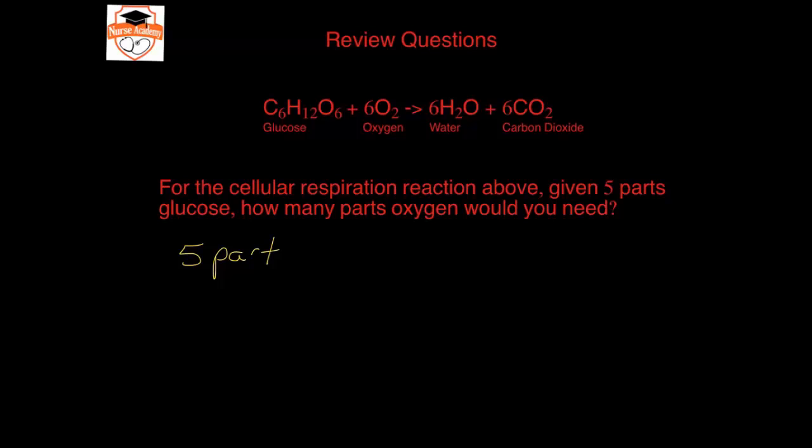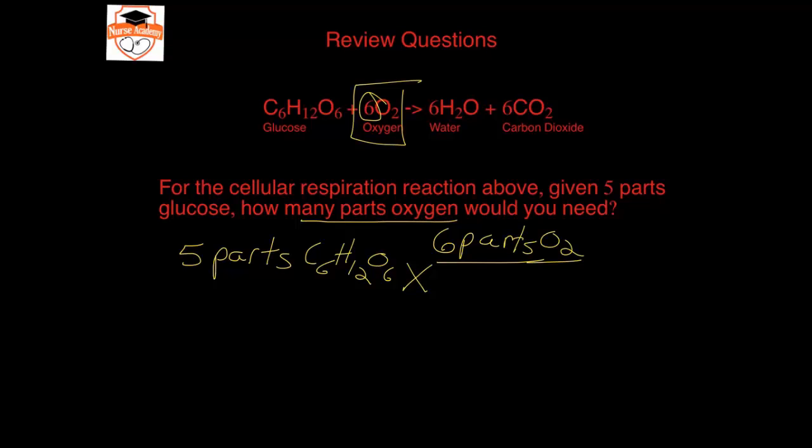So here we're going to start with our given: five parts of C6H12O6. And I'm going to put on top what they're asking for - they're asking for parts of oxygen, so I'm going to need that number: six parts O2. And then on the bottom I need to get rid of the parts of glucose, and it's one part glucose reacts with six parts oxygen. So here I'll be one part glucose or C6H12O6, and in order to solve this I will take five times six divided by one. Five times six is thirty, so it's thirty parts O2 are needed.